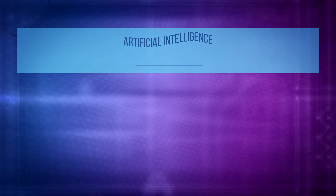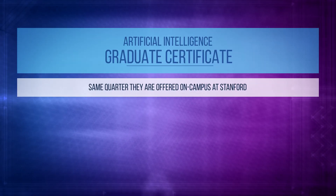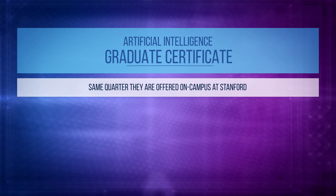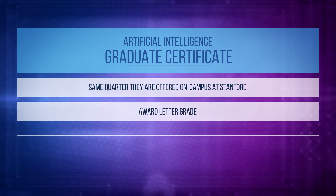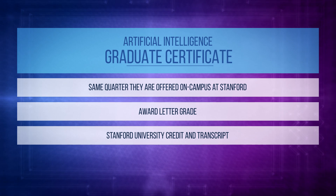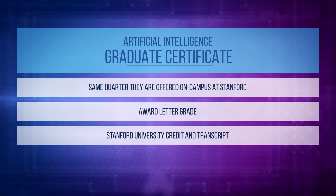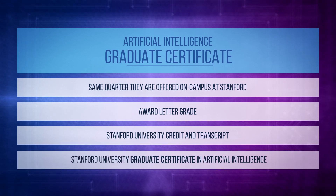Students take courses online alongside on-campus students in the same quarter they are offered at Stanford. Graduate courses award letter grades and Stanford University credit and transcript. When you successfully complete four courses in the program, you will earn a Stanford University Graduate Certificate in Artificial Intelligence.